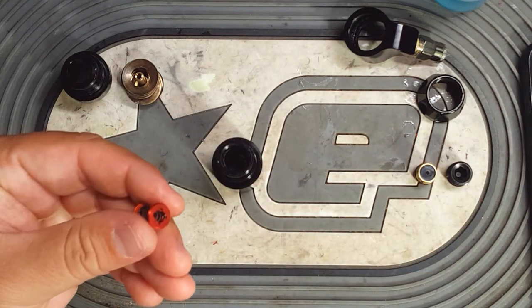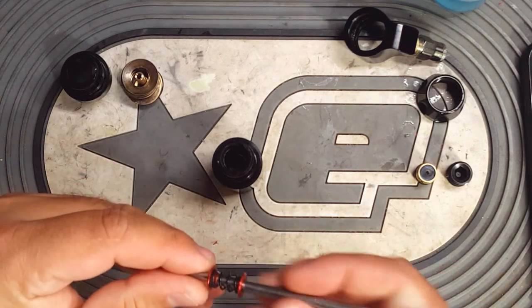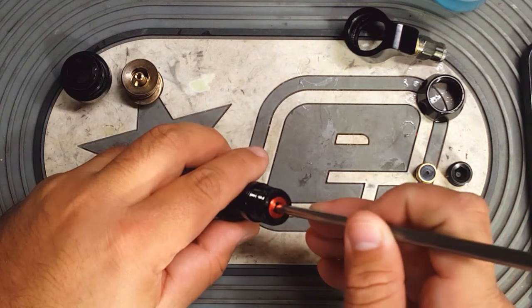I've found using a long allen key or a long punch or something along those lines keeps everything lined up. Just drop it all down as one assembly.